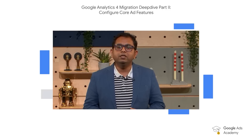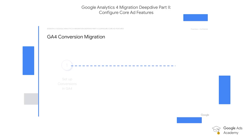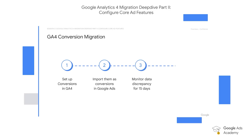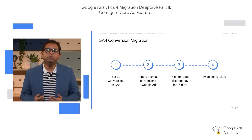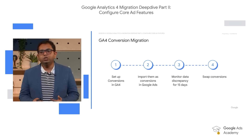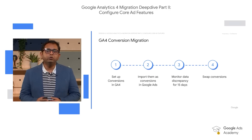GA4 conversion migration is a four-step process. First step is to set up conversions in GA4. Second step is to import them as conversions in Google Ads. Then the third step is to monitor data discrepancy for 15 days. And then the final fourth step is to complete migration with conversion swaps. I would encourage you to re-watch this video to do step-by-step implementations later at your own pace.